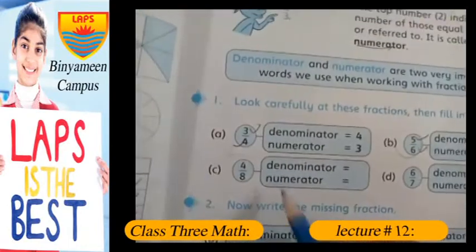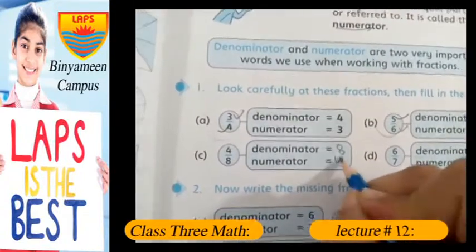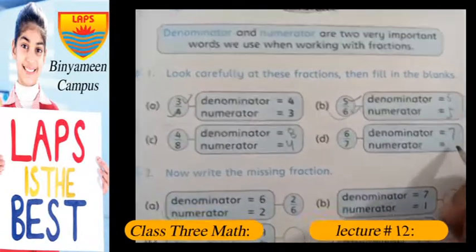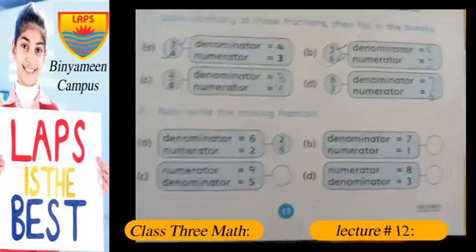And for this fraction, 4 and 8, denominator is equal to 8 and numerator is equal to 4. And in this fraction, denominator is equal to 7 and numerator is equal to 6. In this fraction, the denominator and numerator are written, and we have to write the missing fraction.